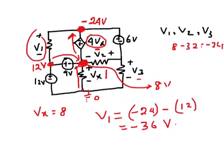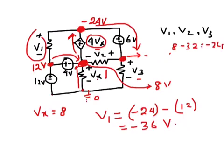From the minus 24-volt node, there is a 6-volt drop, so this point will be minus 24 minus 6, which is minus 30 volts. The 6 more volts drop in this direction gives us minus 30 volts at this node.